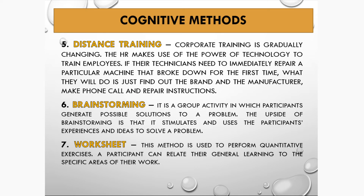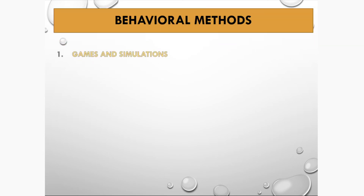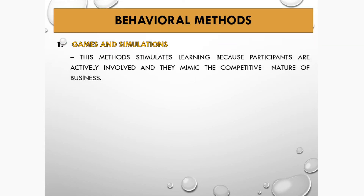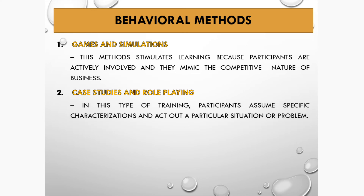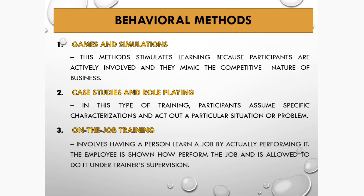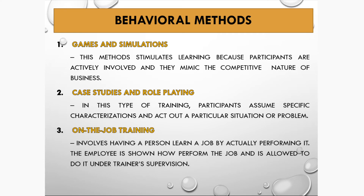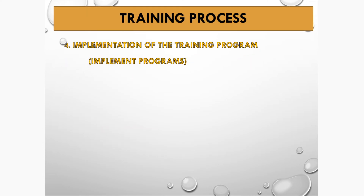The various methods under behavioral methods include games and simulations, which stimulate learning because participants are actively involved and mimic the competitive nature of business. Case studies and role playing: participants assume specific characterizations and act out a particular situation or problem. On-the-job training (OJT) involves having a person learn a job by actually performing it; the employee is shown how to perform the job and is allowed to do it under the trainer's supervision.